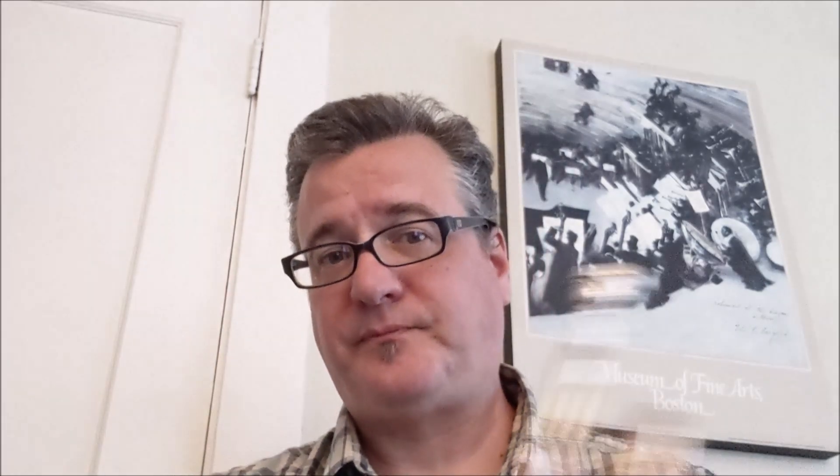That exhausts the easy slur-two variations. The remaining ones are more difficult. We've done slur-two tongue-two, tongue-two slur-two, and slur-two slur-two. Now we'll do 'tongue one, slur two, tongue one' — tongue the C, slur D to E, tongue the F — then the same pattern on the descent. This one is a little harder.